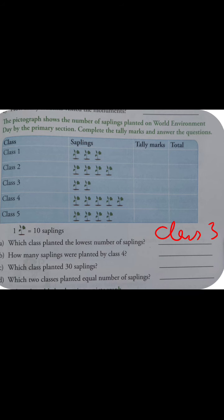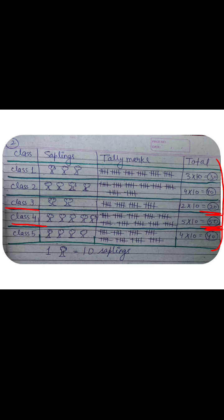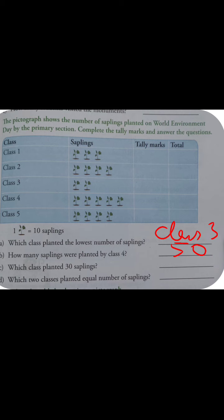We can write our answer: Class 3. Now the next question is: how many saplings were planted by Class 4? If we look at Class 4, it planted a total of 50 saplings.